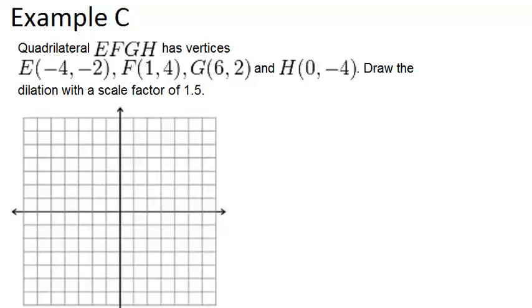So the first thing we want to do is plot the original four points. In other words, plot quadrilateral EFGH. So here we have all four points in quadrilateral EFGH. Let's connect them.